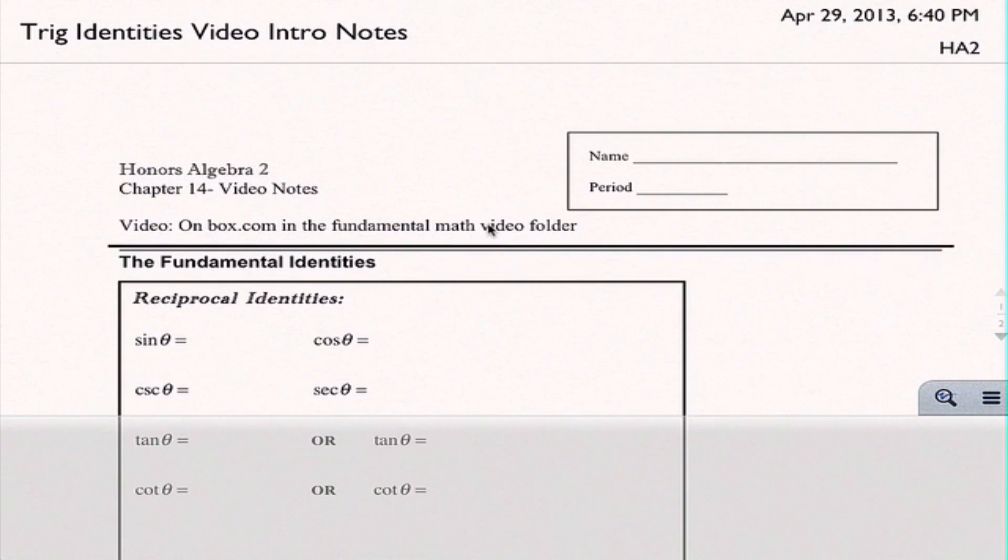So we're going to be talking about some really important identities, some fundamental identities which include the reciprocal trigonometric identities and the Pythagorean trigonometric identities. It is really important that we know these going into class next time because we need to actually use them in problems, so your life is going to be much easier if you know them.